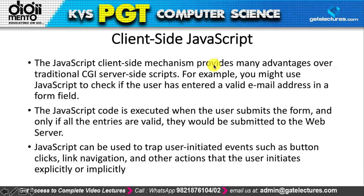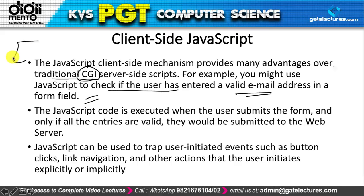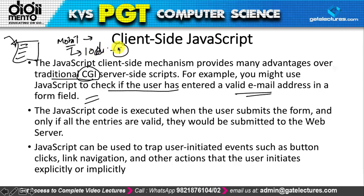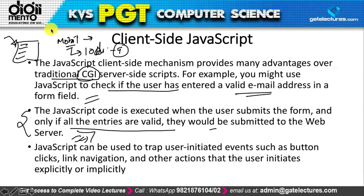JavaScript's client-side mechanism provides many advantages over traditional CGI scripts. For example, you can use JavaScript to check if a user has entered valid information in a form — such as ensuring a mobile phone number has 10 digits rather than 9, or that a name field isn't filled with a phone number. You can show alert boxes for incorrect entries. The JavaScript code executes when the user submits the form, and only if entries are valid will the form be submitted.